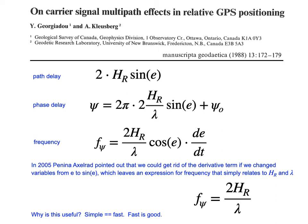I take advantage of something Penny Axelrad pointed out: we can get rid of that derivative term by switching variables from elevation angle to sine of elevation angle. Then you have a very simple multipath frequency. Simple equals fast, and that means we can use standard periodogram techniques to estimate this term. If we know that term, we can get a handle on the multipath environment.